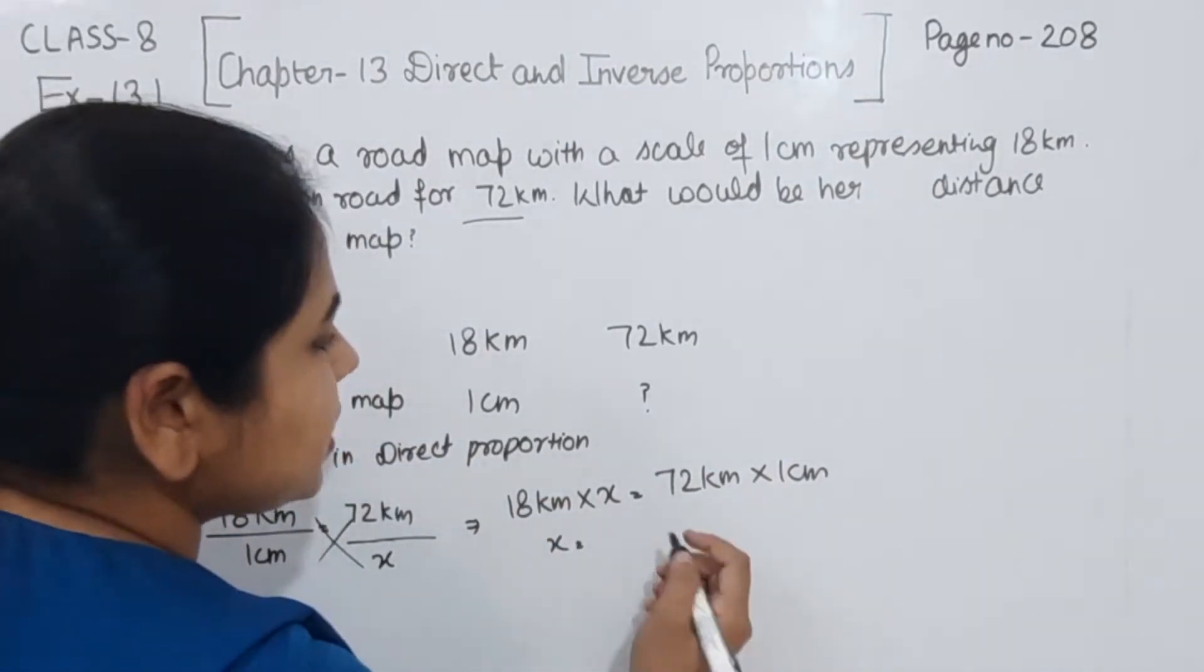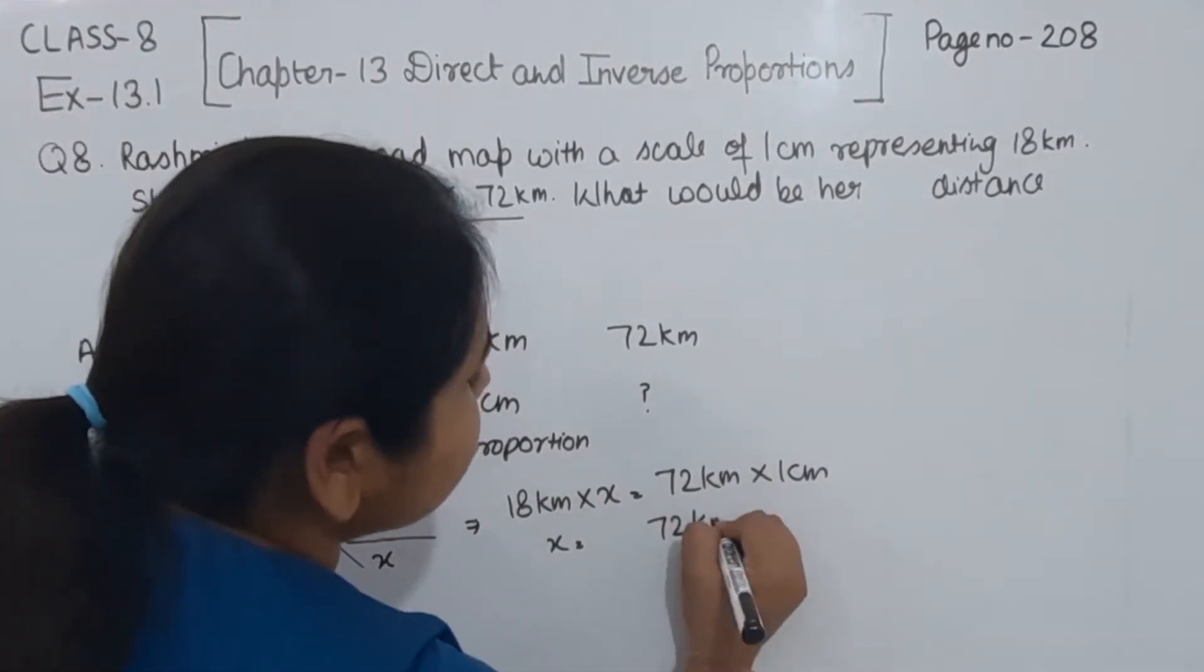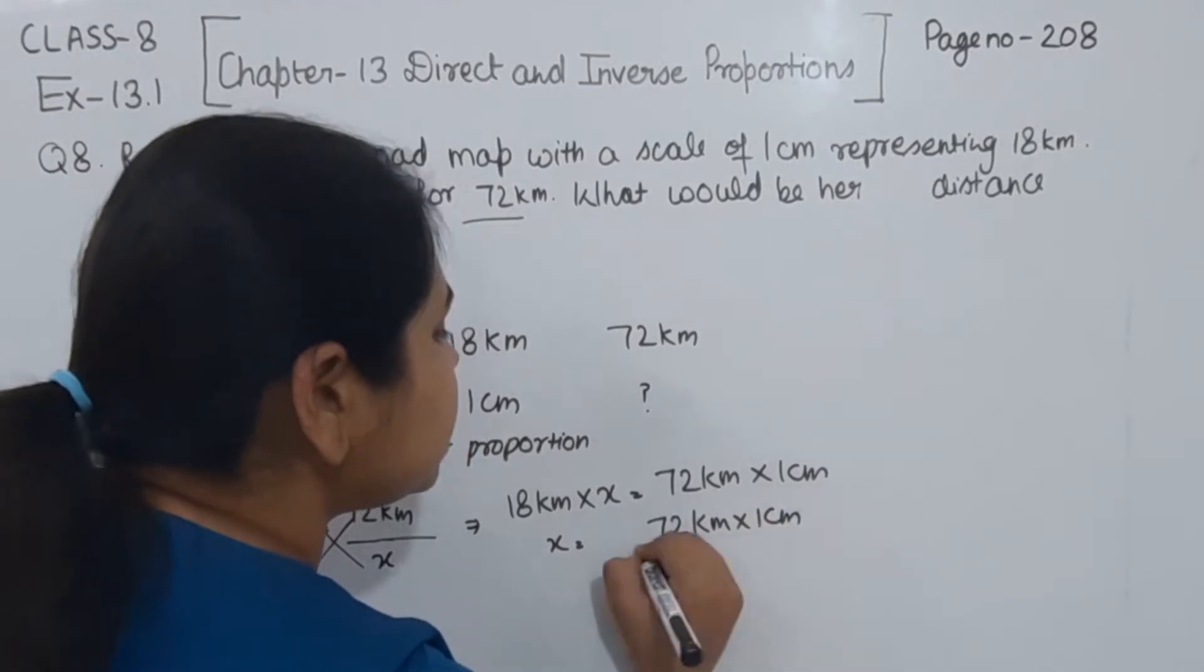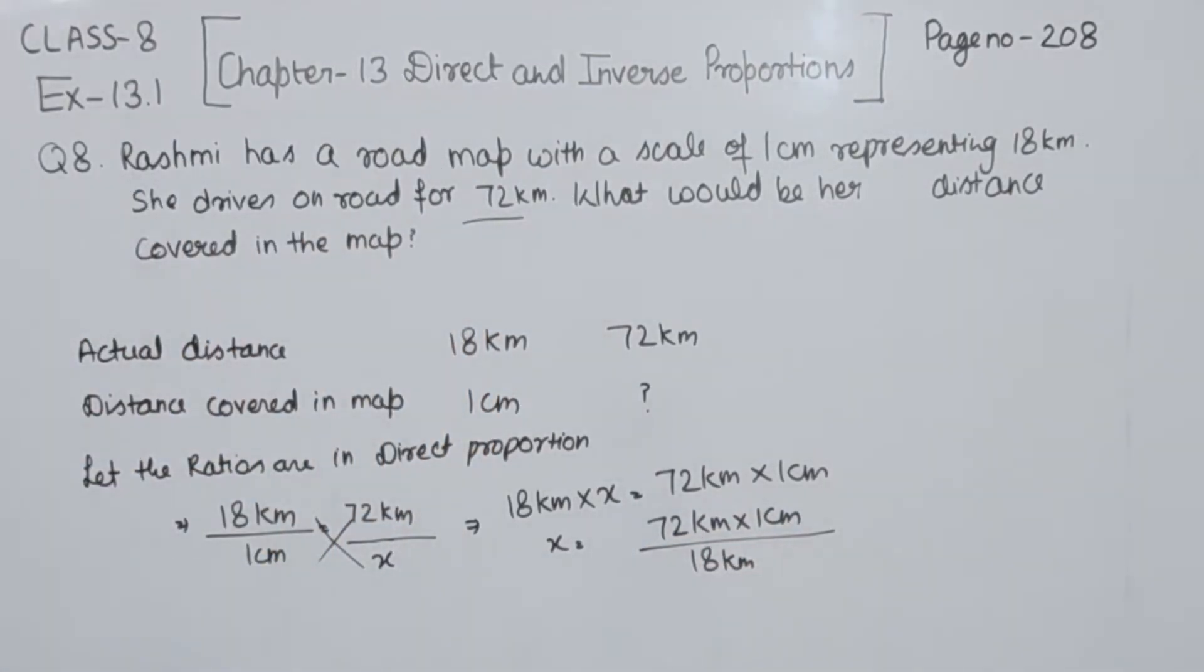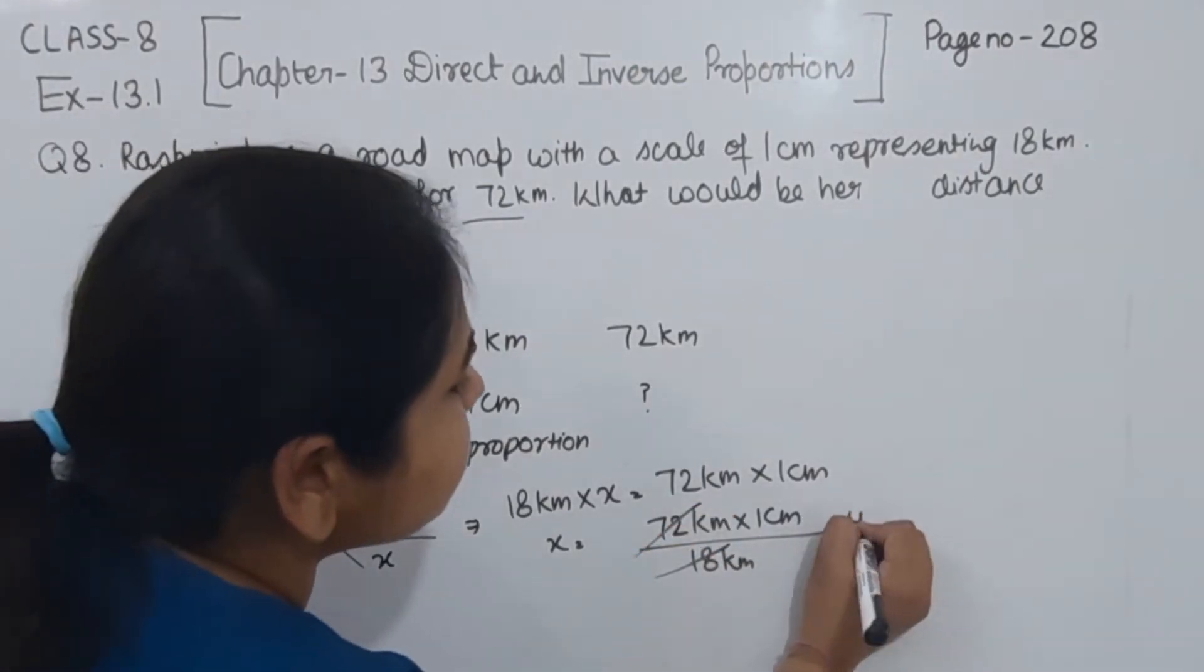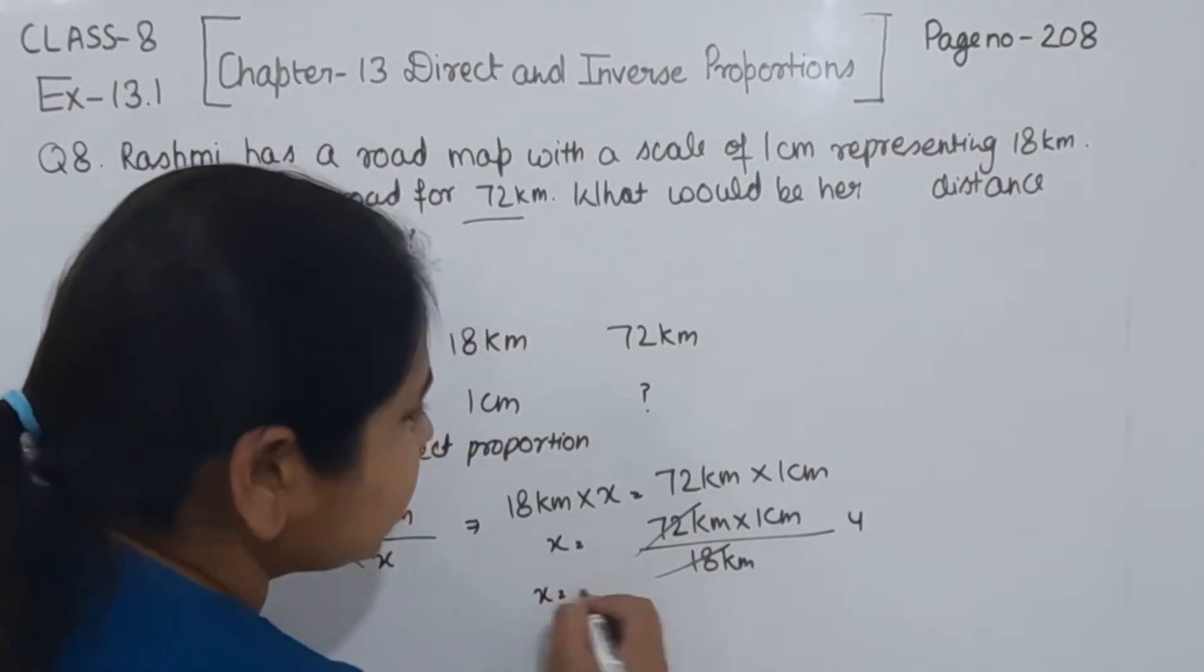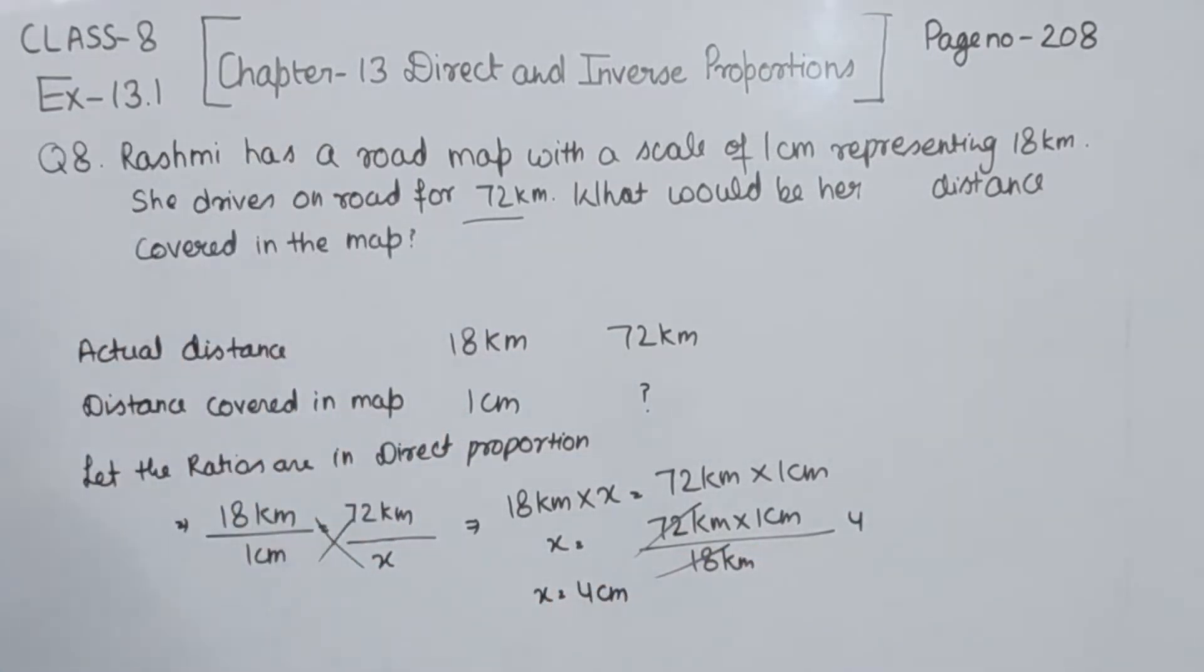Now we are going to transpose this 18 from left hand side to the right hand side. So this one we are having as 18 km here. Now we are going to divide 72 km by 18 km. So this one we are having as equal to 4. So I am going to write here, 18 for the 72. So the value of x we are having as equal to 4 cm.